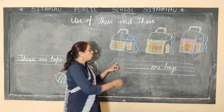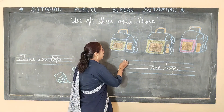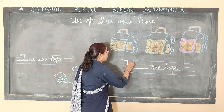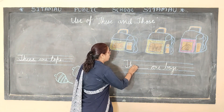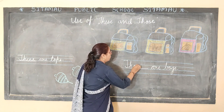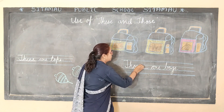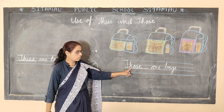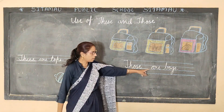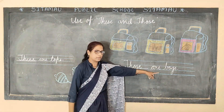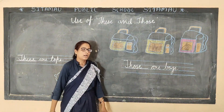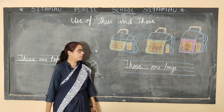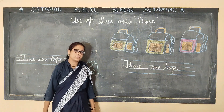So, we will write here 'those' — T, H, O, S, E — those. Those are best. I hope you will practice.